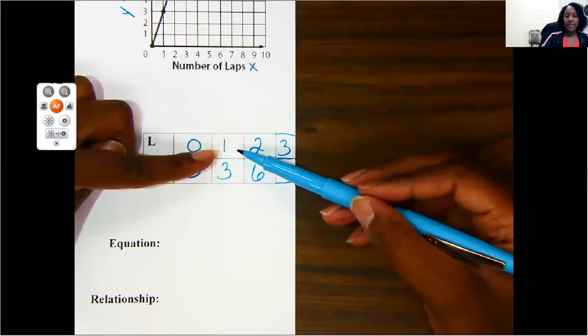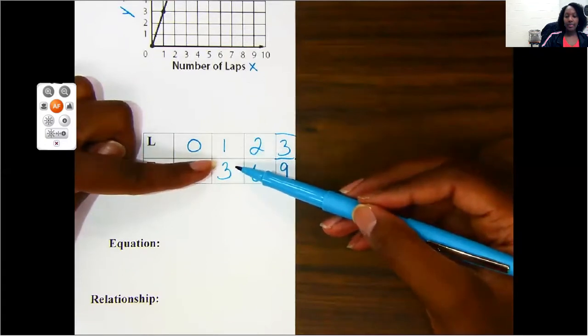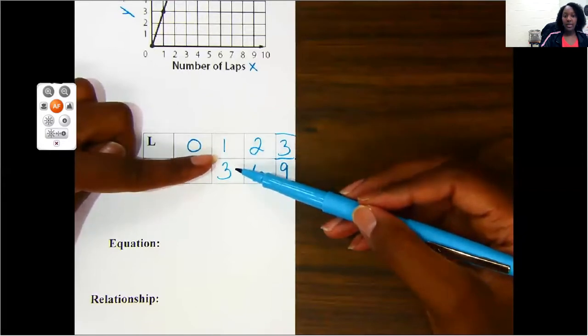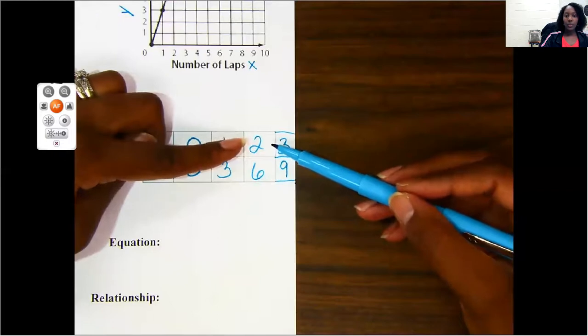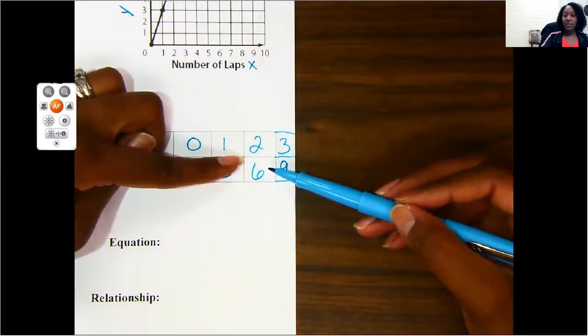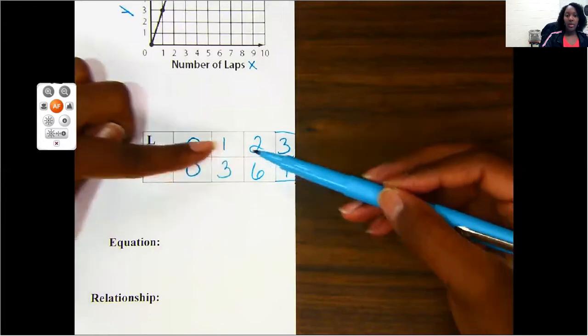If you said two, that is correct. One plus two gives me three. So let's see if that works over here. Two plus two, does that give me six? It does not. Two plus two gives me four. So that means I did not add two to get these answers. So I need to go back over here.